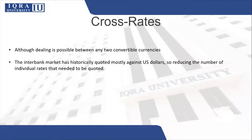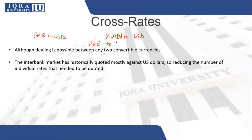For example, you can quote PKR to Thai Baht or PKR to Yuan directly. However, most quotations are found in the form of PKR to USD or Yuan to USD. You cannot find PKR to Yuan directly because there would be too many quotations if every pair were combined. So if you know these two rates, you can figure out the third — this is called a cross rate.